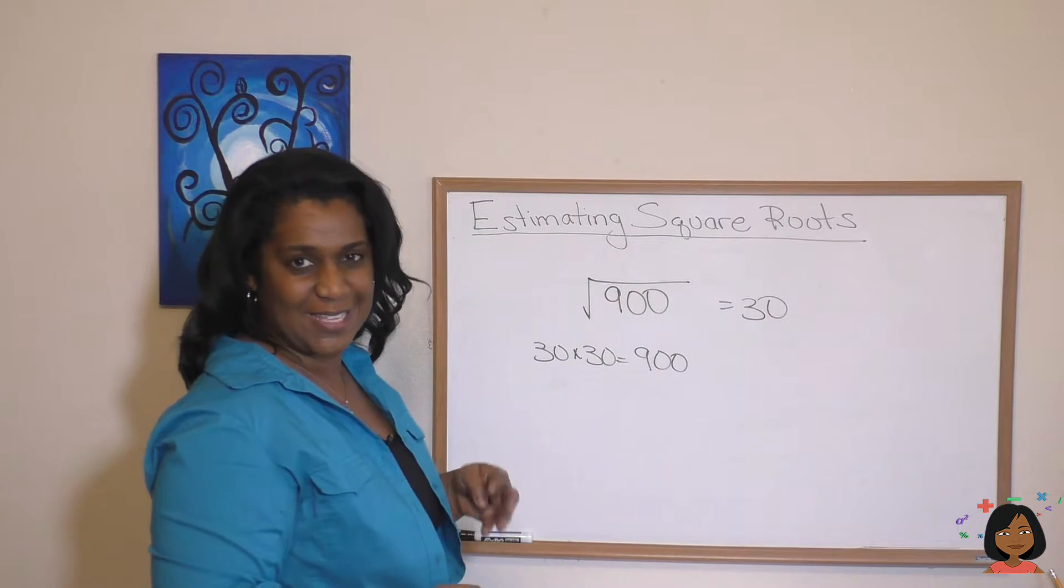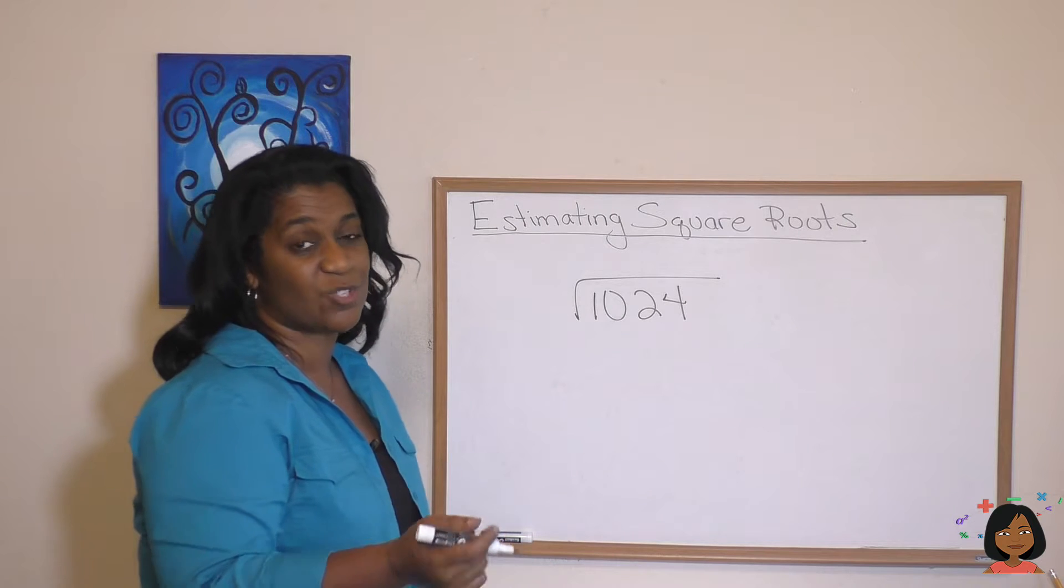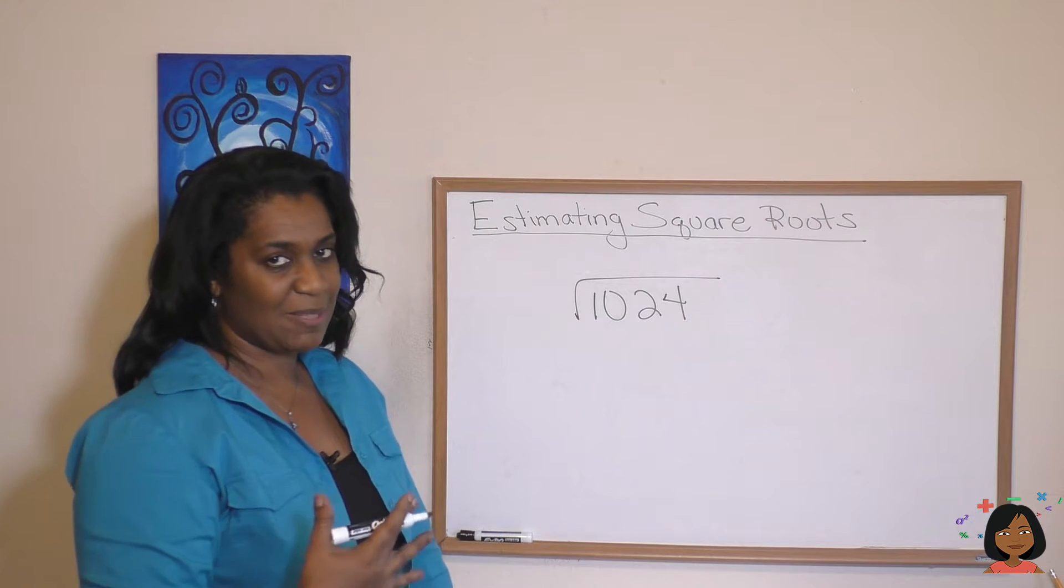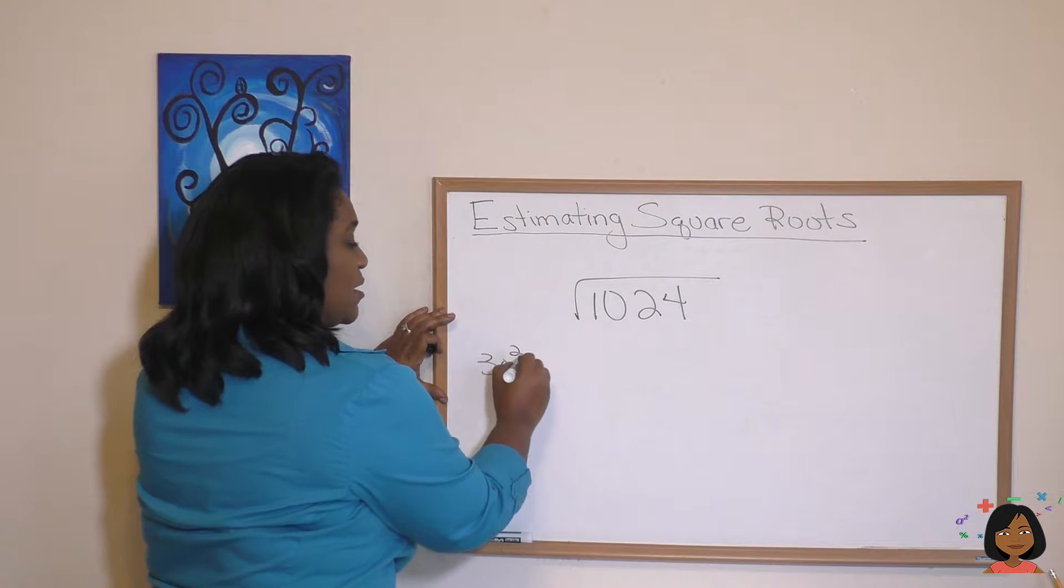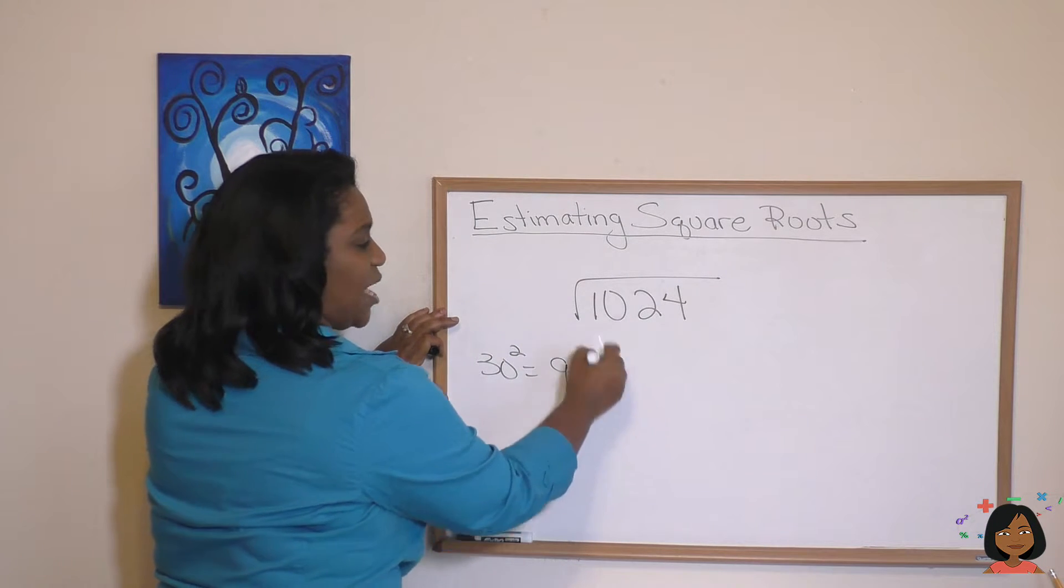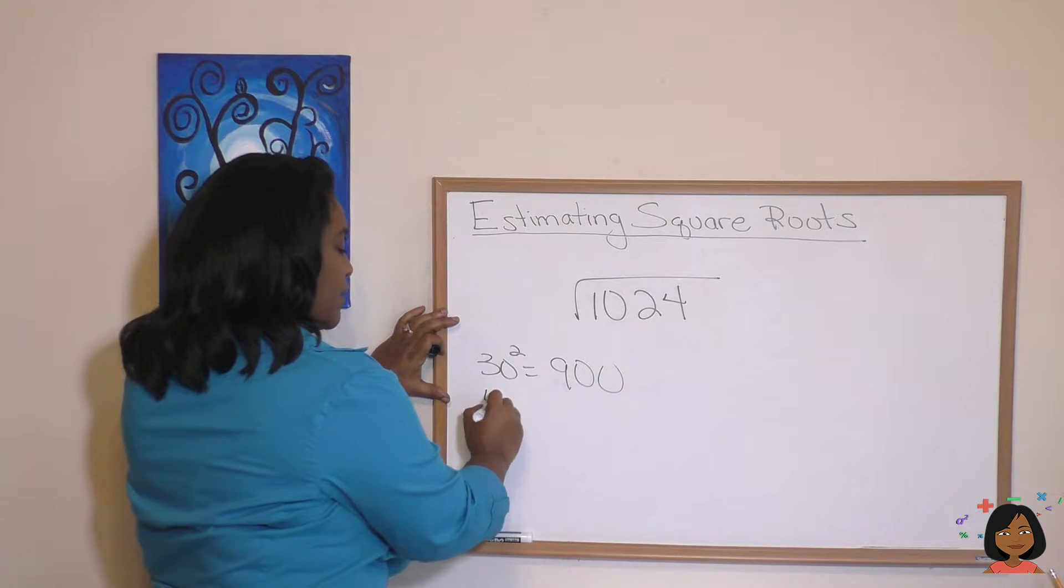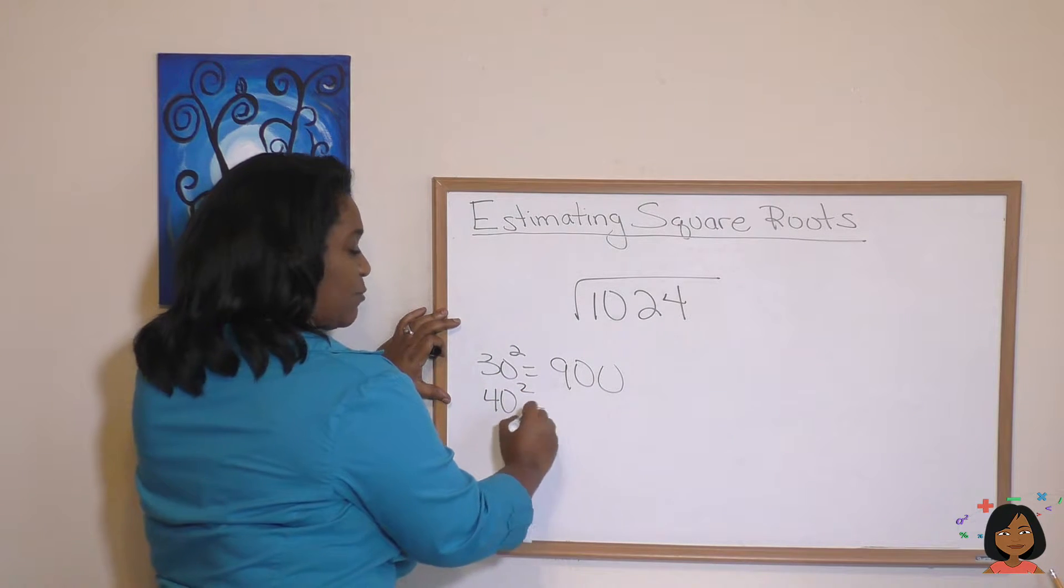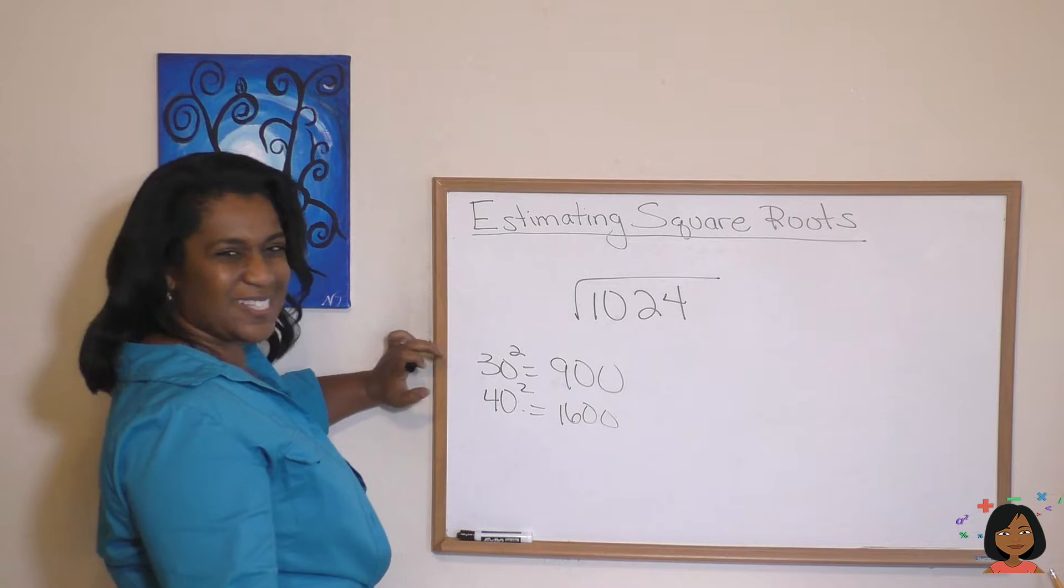Another way to try to estimate. Let's try a harder number. So here we have the square root of 1024. Let's look at some numbers. We already know we just did 30 times 30, right? 30 times 30 was 900. So it's not too far from there. But if we did 40, 40 times 40, we know that 4 times 4 is 16. So it's got to be between 30 and 40, but it's closer to the 30.